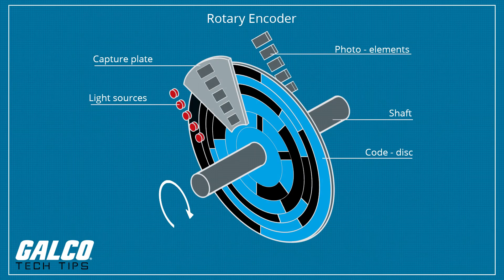A rotary encoder, also called a shaft encoder, is an electromechanical device that converts the angular position or motion of a shaft or axle to an analog or digital code. Rotary encoders are used in many applications that require precise shaft unlimited rotation, including industrial controls and robotics.